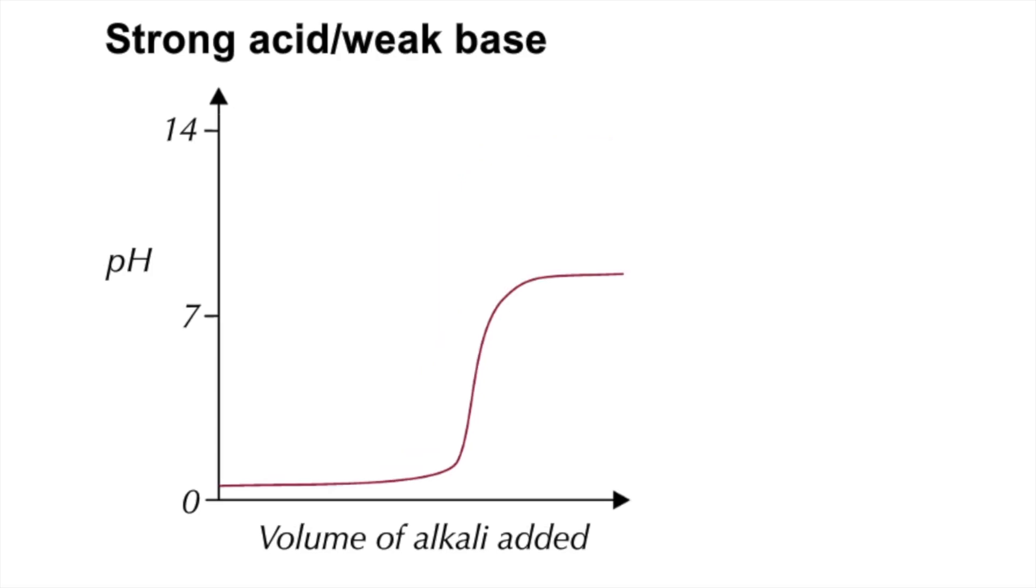Strong acid-weak base now. You can see the pH at the start is very low, strong acid. The pH at the end of the titration isn't as high as before, about 8 or 9. That's typically the pH of a weak base.